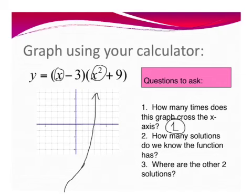But with a cubic, we know that we should have three solutions. So where are the other two solutions?